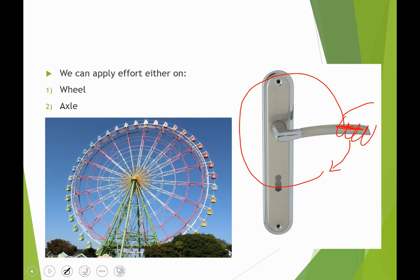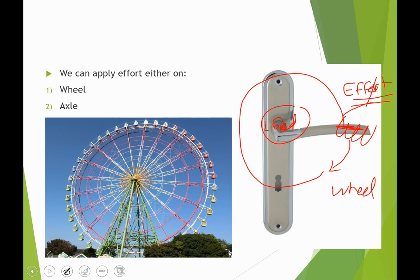The handle is a wheel — although it doesn't rotate fully, it functions as one. When you pull it down, the axle inside, which you cannot see, will also turn clockwise, which opens the door. You are applying the effort on the handle, or the wheel, and the load is on the axle.